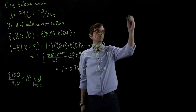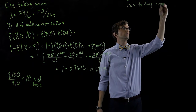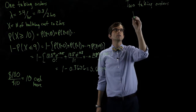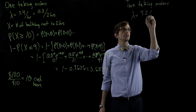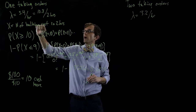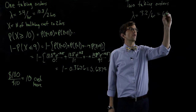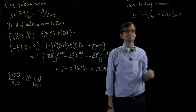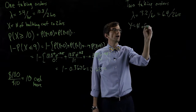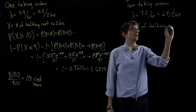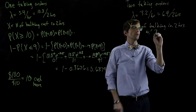Now let's think about two employees taking orders. With two employees, the rate was 3.2 customers leaving per hour — down from 5.4 per hour. For a two-hour window, that's 6.4 customers leaving in two hours. Let's define a random variable Y as the number of balking customers in two hours with two employees taking orders.